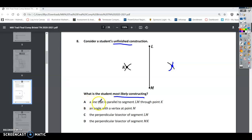So let's see what it says. A line is parallel. Okay, so it's not creating a parallel line. An angle with a vertex. Alright, they wouldn't have the extra mark over here if they were doing an angle construction.